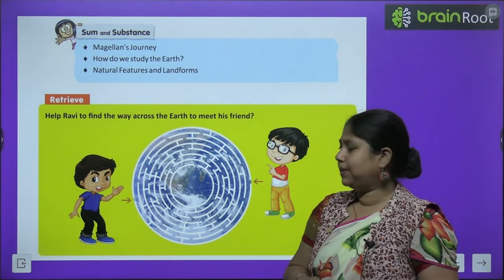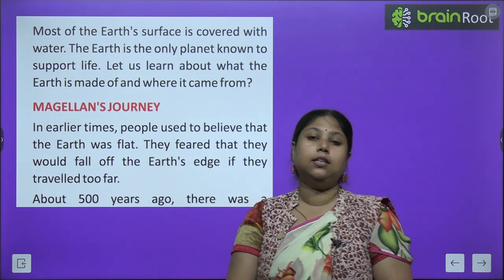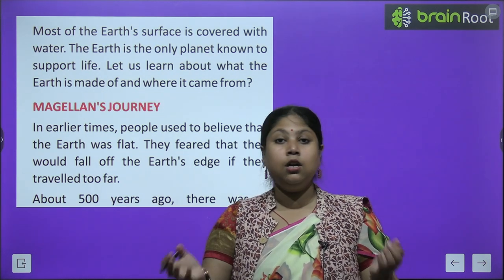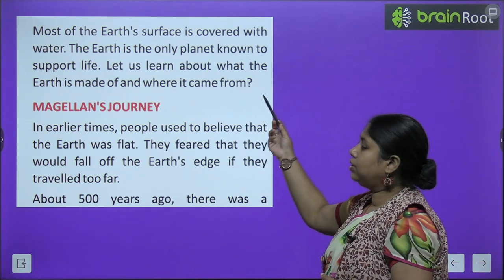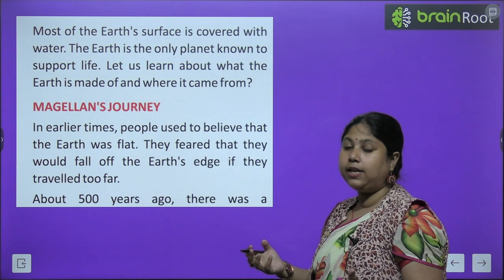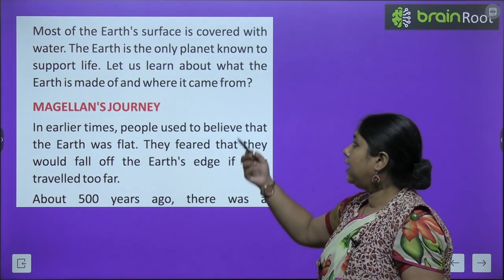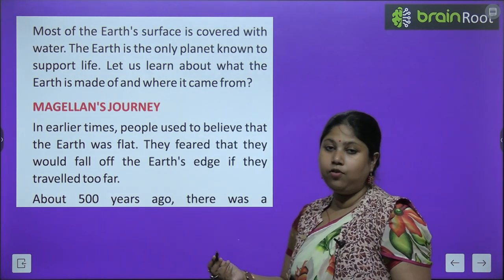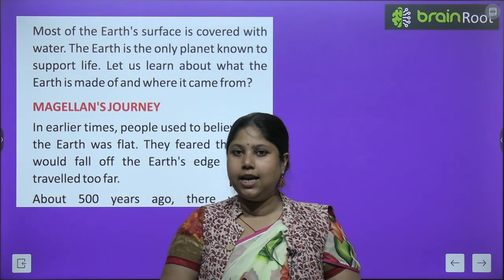Now let's begin the chapter. Most of the earth's surface is covered with water. Hamne last chapter mein padha tha ki earth land aur water se bana hua hai aur zyadatar area jo hai earth ka, wo water se bhara hua hai. The earth is the only planet known to support life — earth hi ek aisa planet hai jahaan pe jeevan possible hai, jahaan jeevan panap sakta hai, jeev jantu ji sakte hain. Let us learn about what the earth is made of and where it came from — aaj hum padhenge ki earth kin cheezon se bana hai aur kahaan se aaya hai.